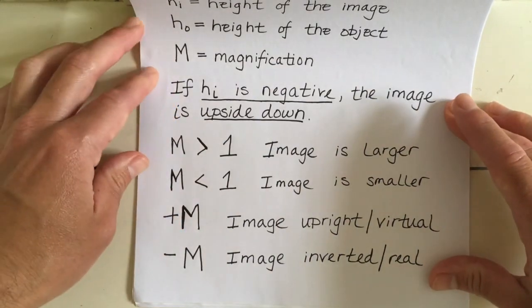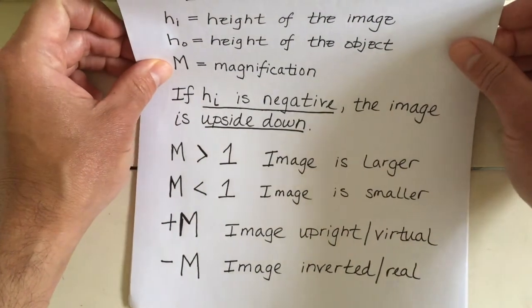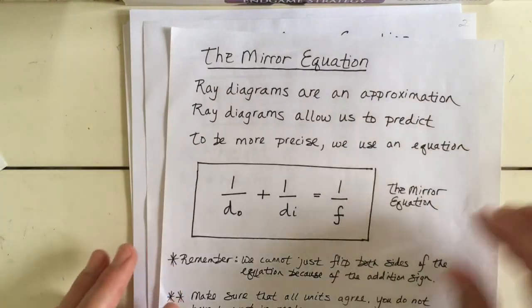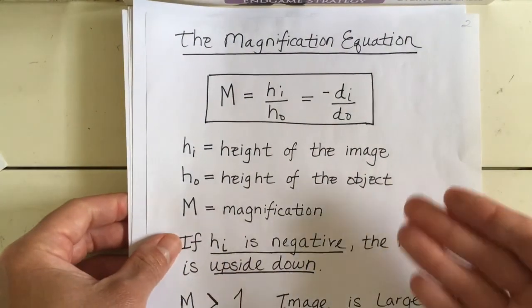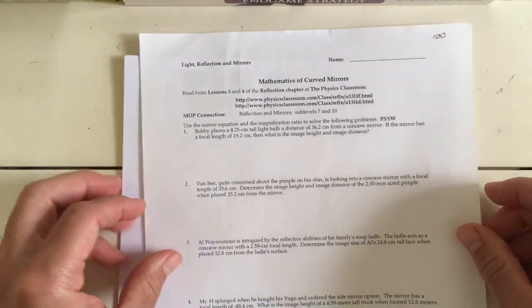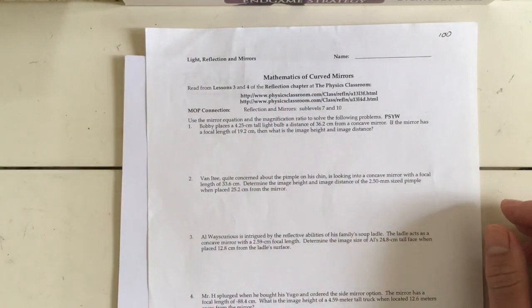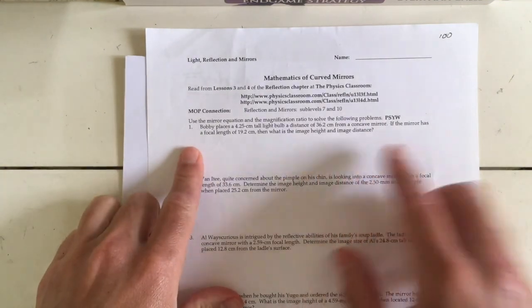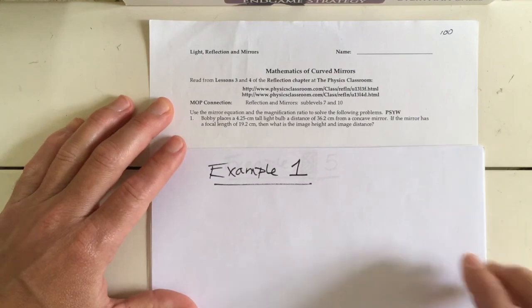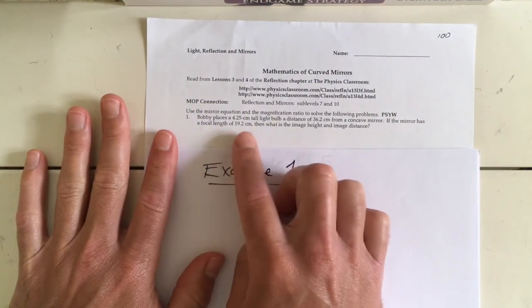All of our inverted images were always real — the light rays really passed through them and they formed on the same side of the mirror as the object. We're now going to use the magnification equation and the mirror equation in a couple of examples. Feel free to pause the video at any point or go back and rewatch. I included a worksheet on Schoology called 'the mathematics of curved mirrors,' and I'm going to work through example one and example five.